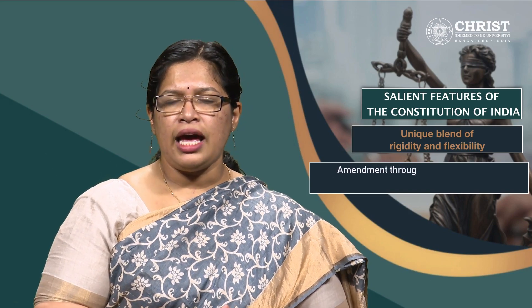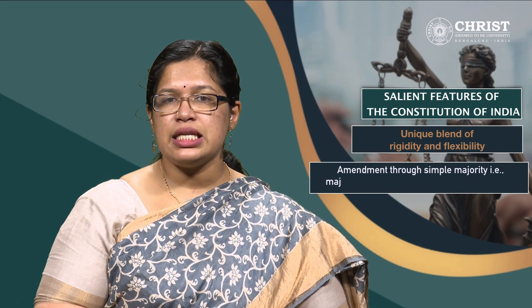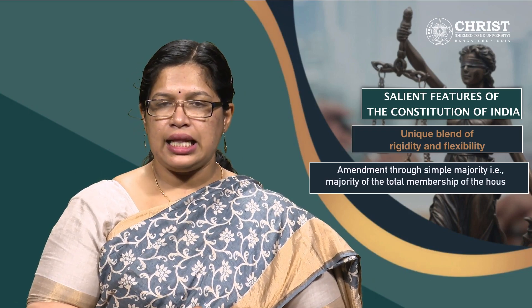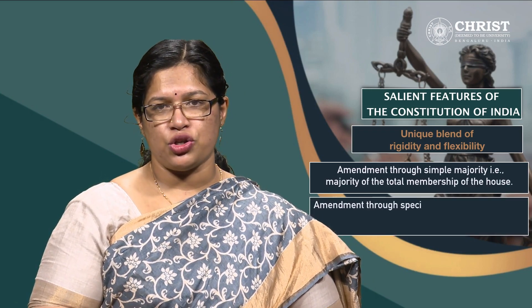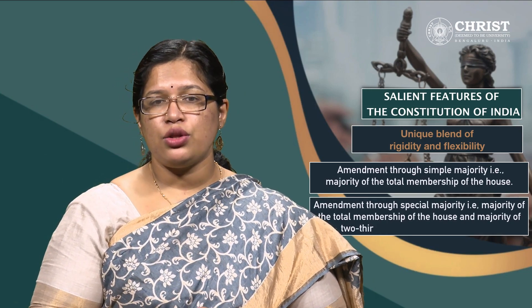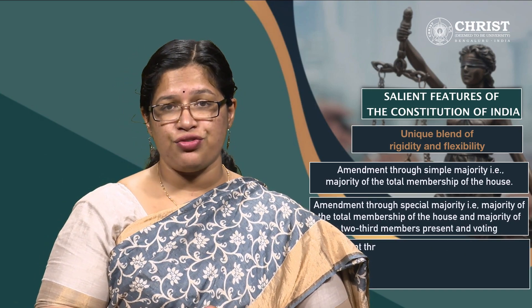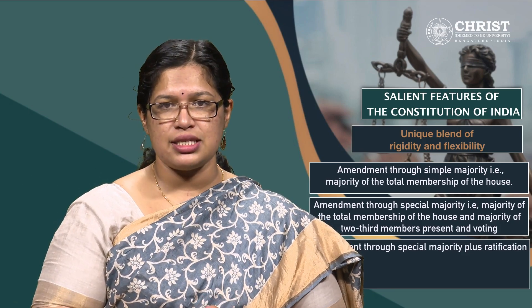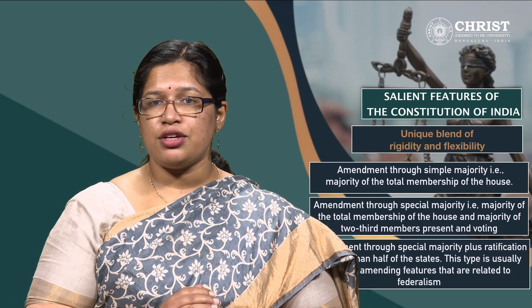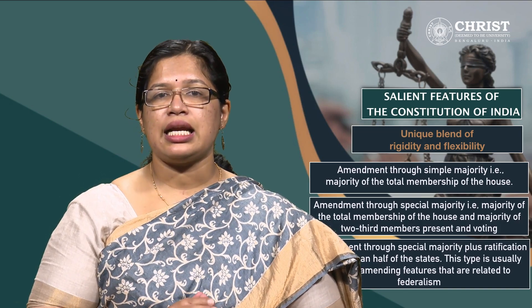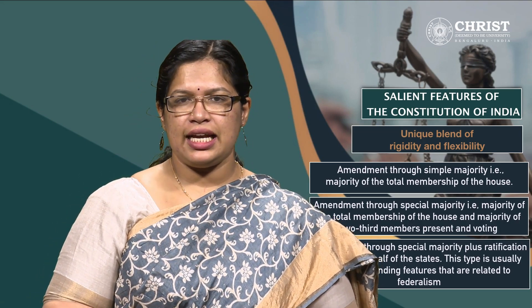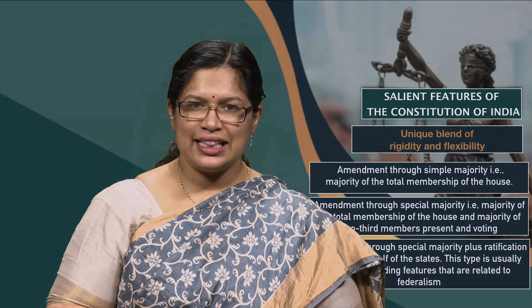Thus, we have adopted a mechanism that is neither too rigid nor too flexible: amendment through simple majority, amendment through special majority, and amendment through special majority plus ratification by more than half of the states. This last type is usually used in amending features related to federalism. We will continue with the rest of the salient features in the next session. Thank you.